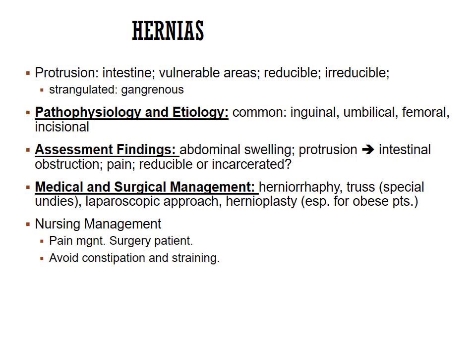For hernias, there are a couple of different kinds. The protrusion type is when the intestines protrude through the abdominal wall in vulnerable areas such as the umbilical region or groin. Hernias are common and are either reducible — meaning you can push them back in — or irreducible, meaning you cannot. Strangulated hernias are when the intestines poke through the abdominal wall, cutting off circulation so that part of the bowel begins to die.